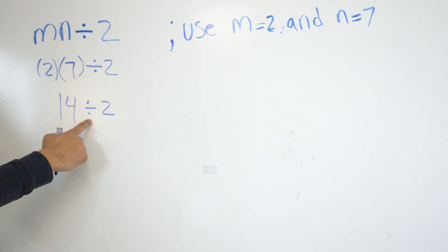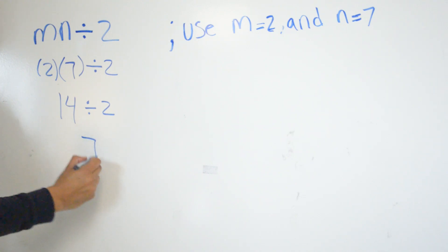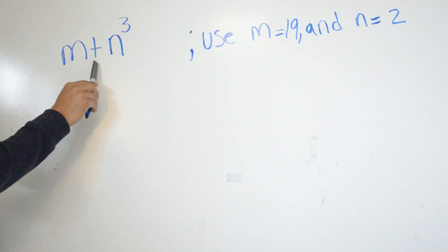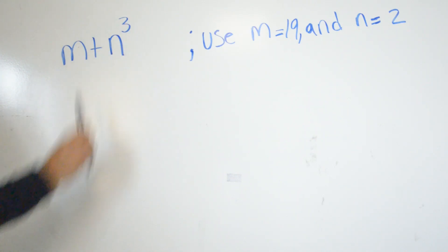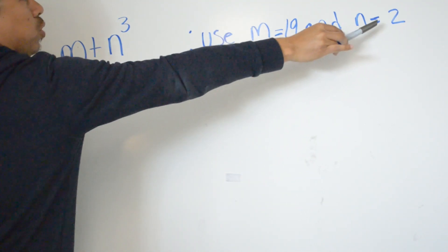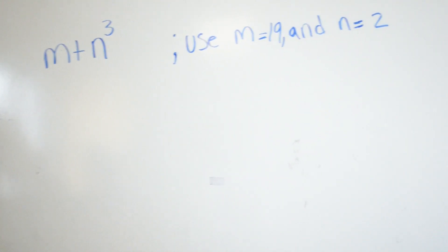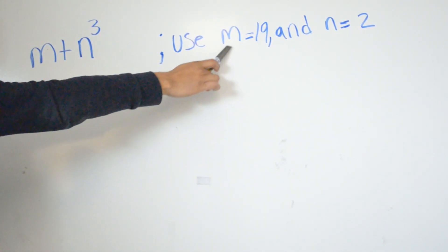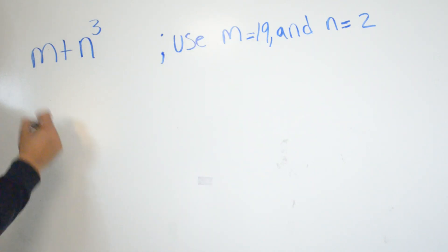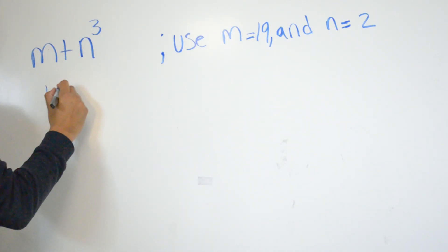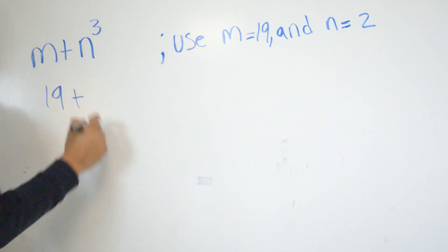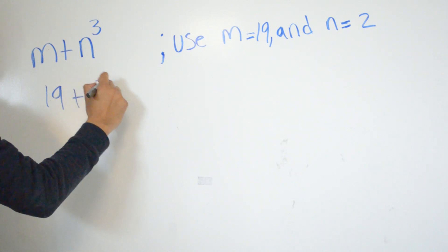In this example we have m plus n to the third power. We have m equals 19 and n equals 2. So we do the same thing we did in the other examples — wherever we see m we plug in the number given. In this situation m is given as 19, so we plug in 19, plus n which is given to us as 2, to the third power.